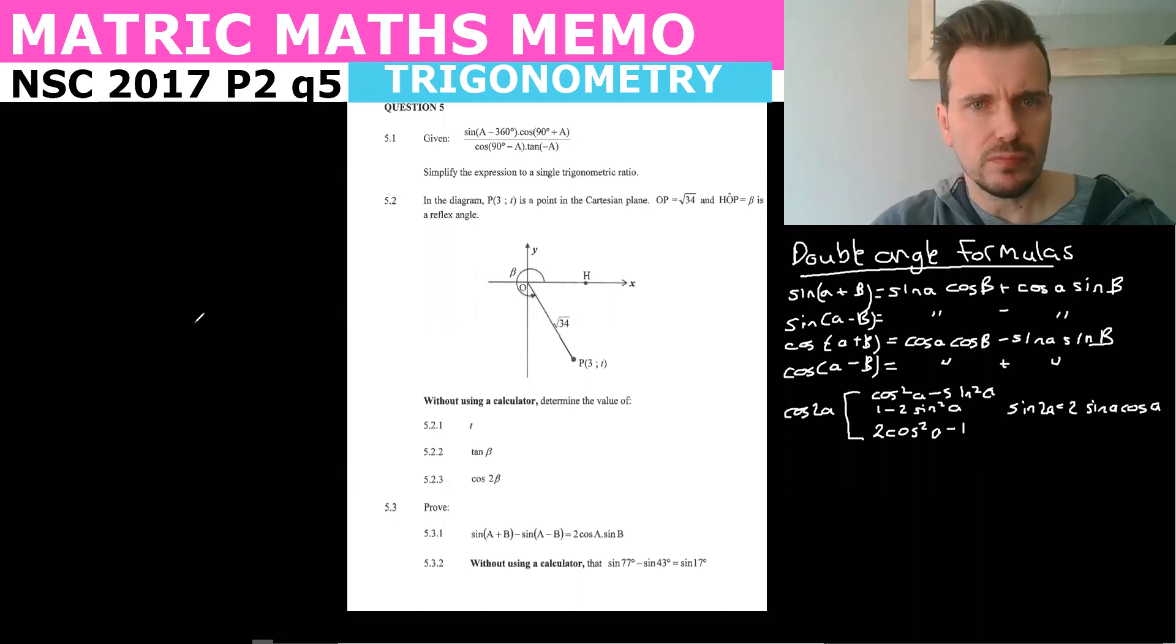Okay, so 5.1. When you simplify, you need to convert to small angles. In other words, A. Well, we know that any time you go around a circle, you just get back to the same point. So whether it's plus or minus 360, you just end up back at the same point.